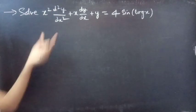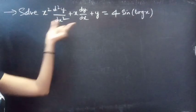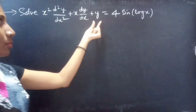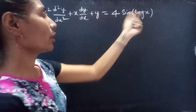Problem: Solve x squared into d squared y by dx squared plus x into dy by dx plus y equals to 4 sin(log x).